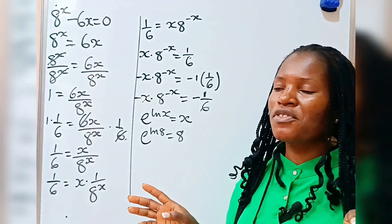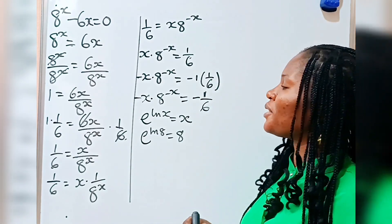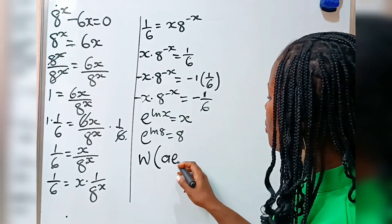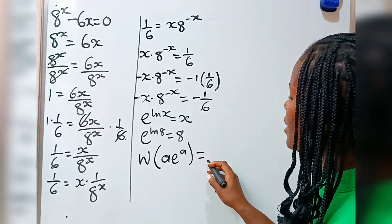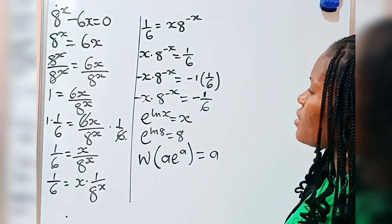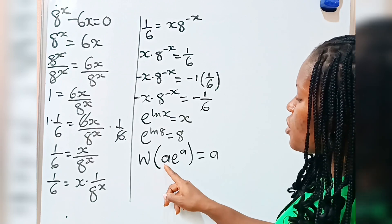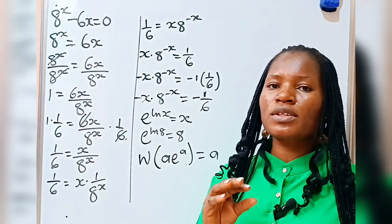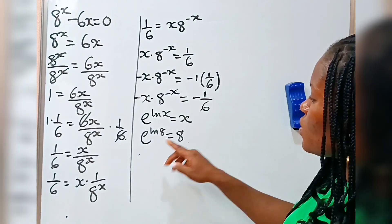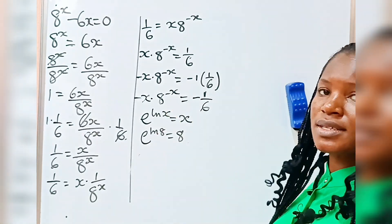Recall the Lambert W function. The Lambert W function is that when you apply this function to a term in this form, it will give you the exponent. What I am trying to do is to get something in this form, whereby the power of my e will also be equal to what is multiplying my e. That is why I need to introduce e, and that is why I did e to the power of ln 8 to get 8 as well.